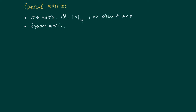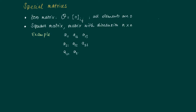Another type of special matrix, which is quite dominant in all the theory we're going to build, is the square matrix. These are matrices with exactly as many rows as columns, so it's a matrix with dimension n times n. For example, consider the following three by three matrix built up from generic elements a_ij.